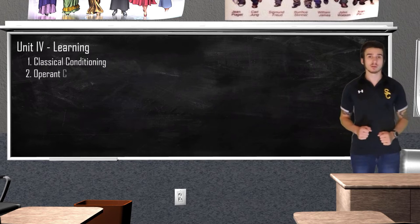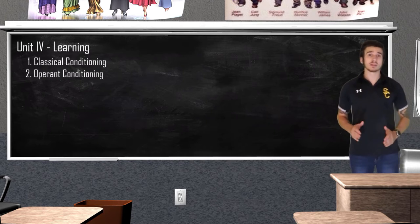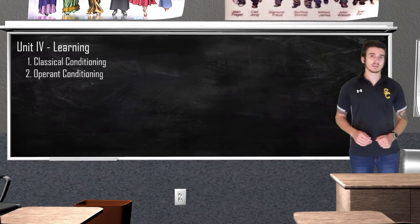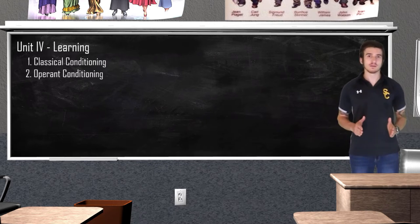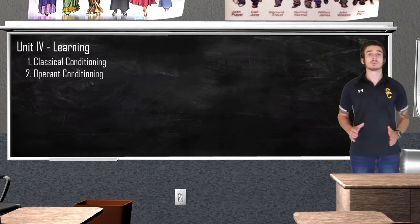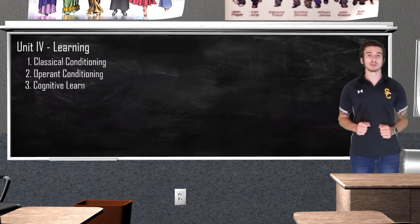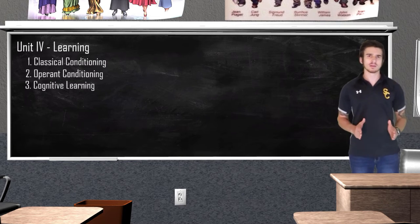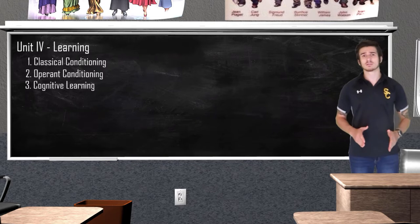Then we will move on to operant conditioning. We will take a look at some of the works of B.F. Skinner to see how reinforcement or punishment can lead to a voluntary behavior change, and we will also talk about some of the contemporary views on operant conditioning. And we will end our Unit 4 review with cognitive learning, looking at observational learning with the Bobo the Doll experiment and other forms of cognitive learning.